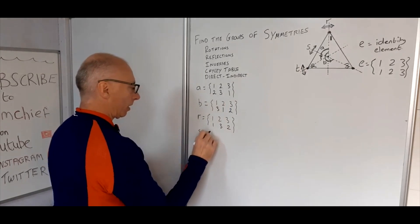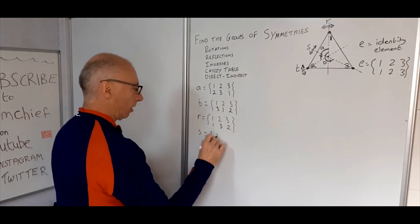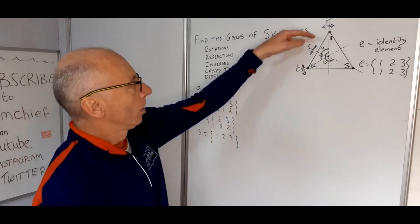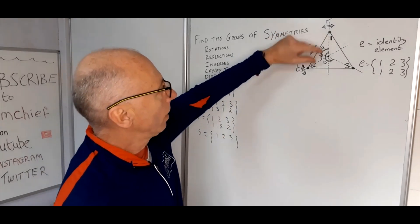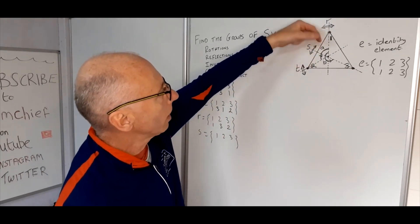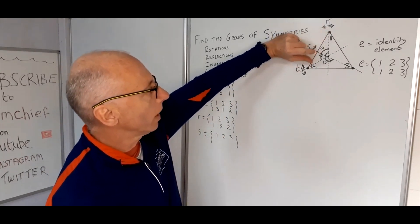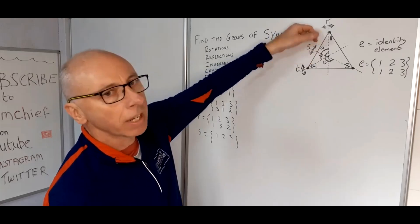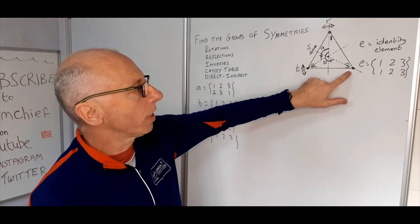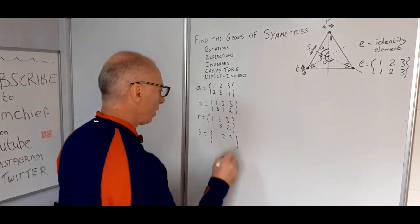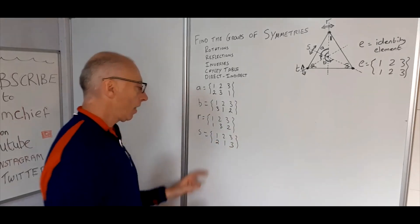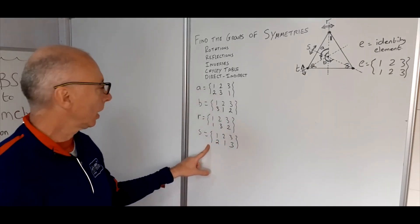Let's have a look at S. Starting points again — one and two are going to change places because we reflect this way, and point three is going to stay. So that gives us that two-line permutation for S.